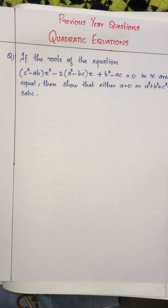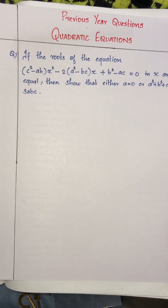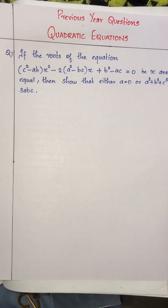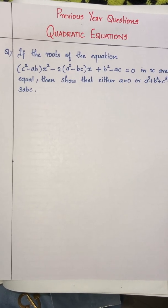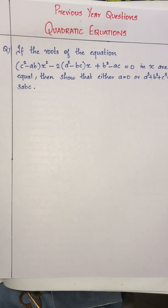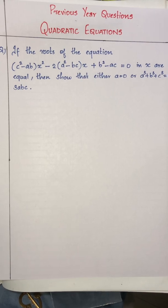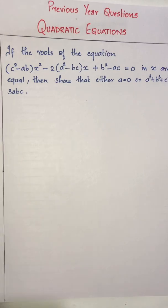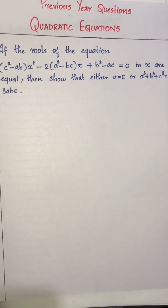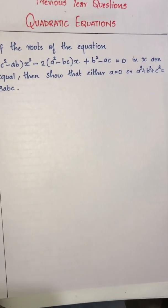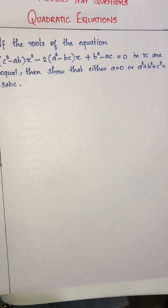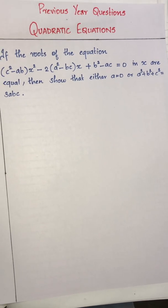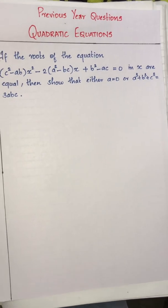If the roots of the equation (c²-ab)x² - 2(a²-bc)x + (b²-ac) = 0 in x are equal, then show that either a is equal to 0, or a³+b³+c³ is equal to 3abc.